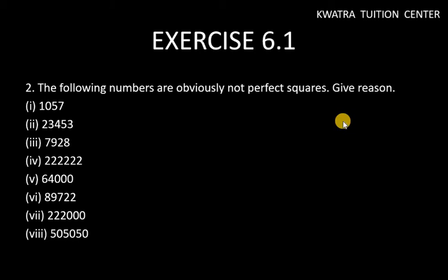Hello everyone, let's start with question number 2 of exercise 6.1. In this it says the following numbers are obviously not perfect squares. They have already told us that these numbers given are not perfect squares. So you have to give reason for that. So what will be the reason for this?